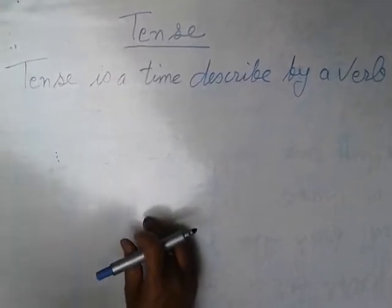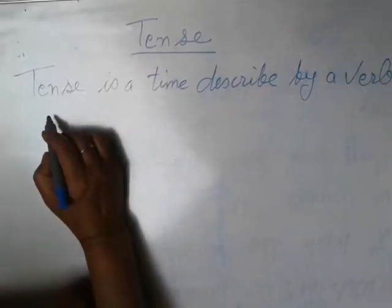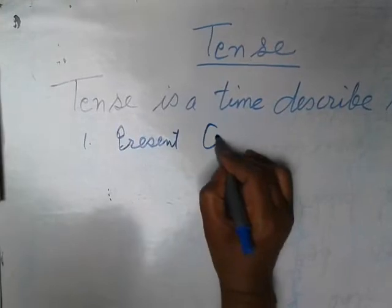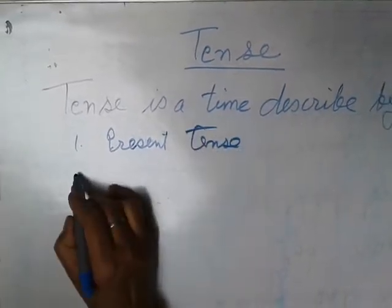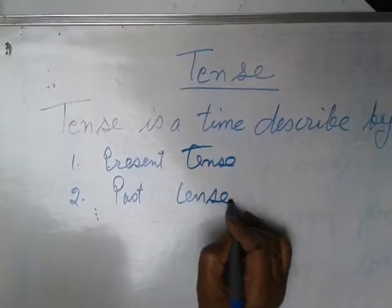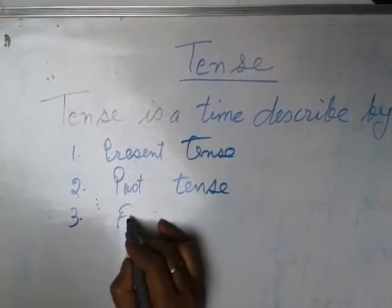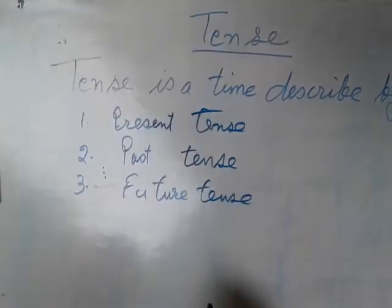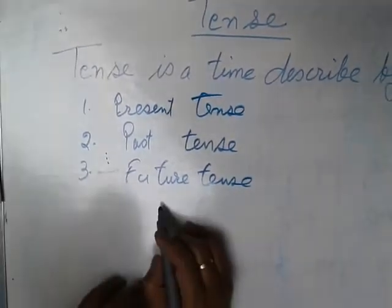There are three types of tense. The first is present tense, second is past tense, and third is future tense. Today we will discuss in detail about present tense.